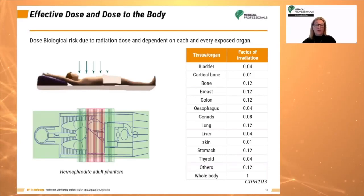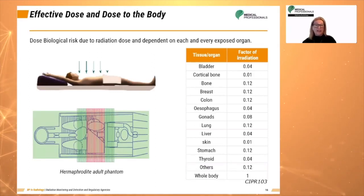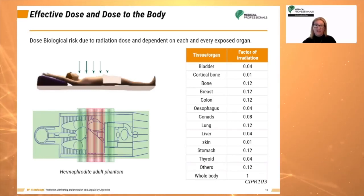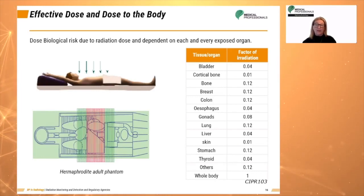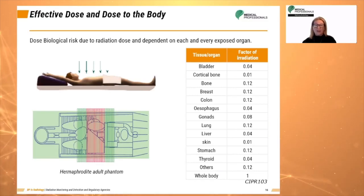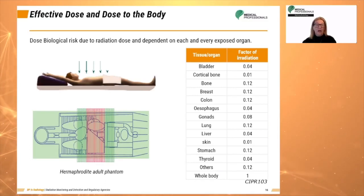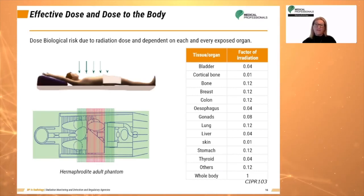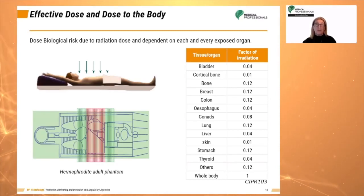Another important parameter is the effective dose, which is useful in assessing and comparing the potential biological risk of a specific examination. Technologists are required to optimize parameters and obtain data required for the diagnosis by using the lowest possible irradiation. Unfortunately, it is very difficult to obtain the precise value of doses delivered and we are forced to use only estimations.